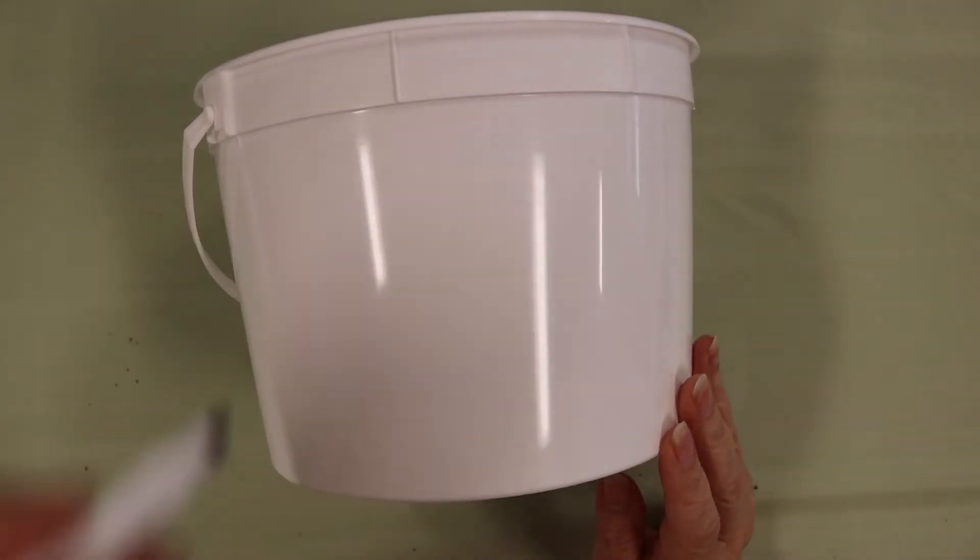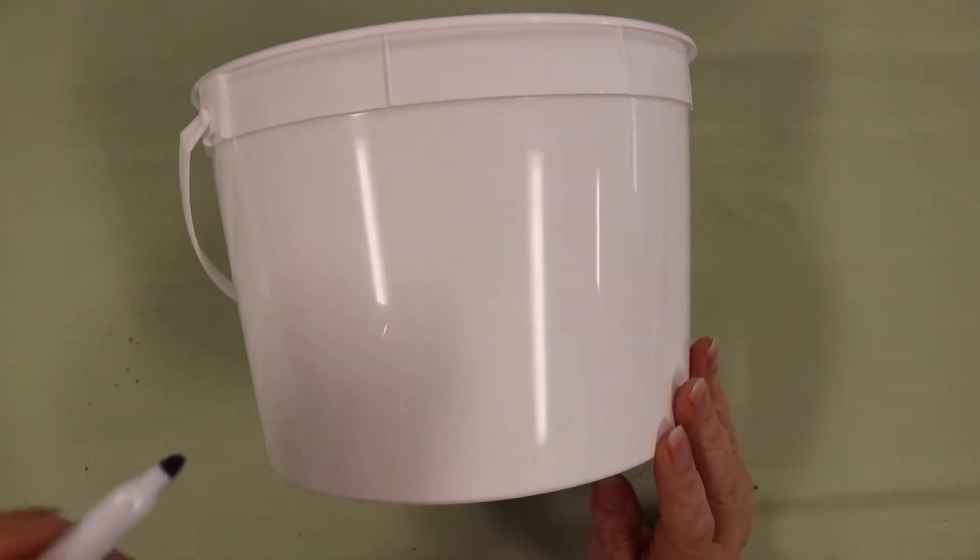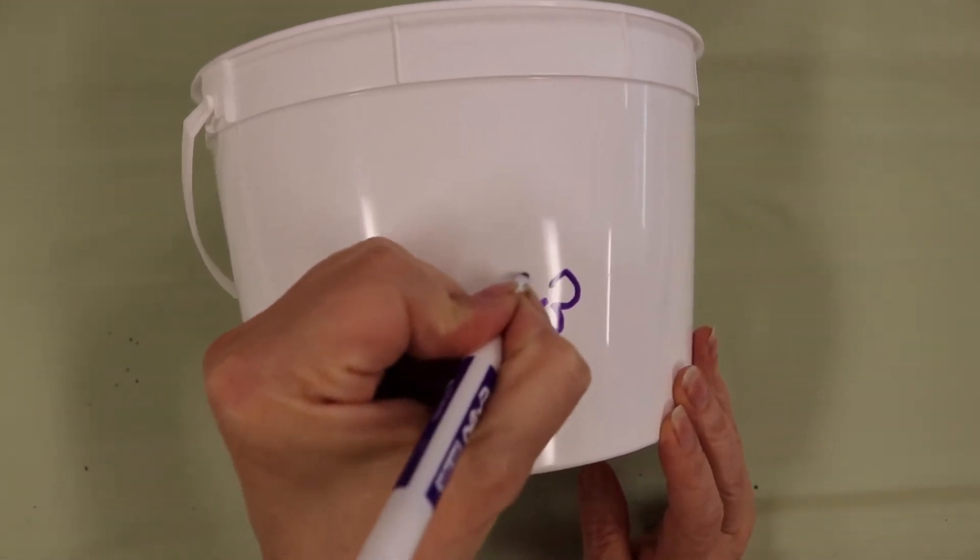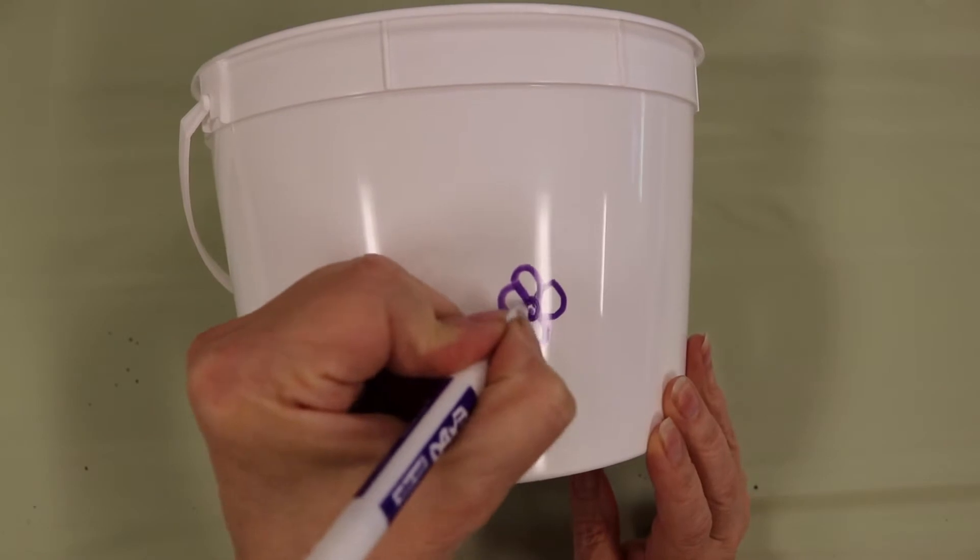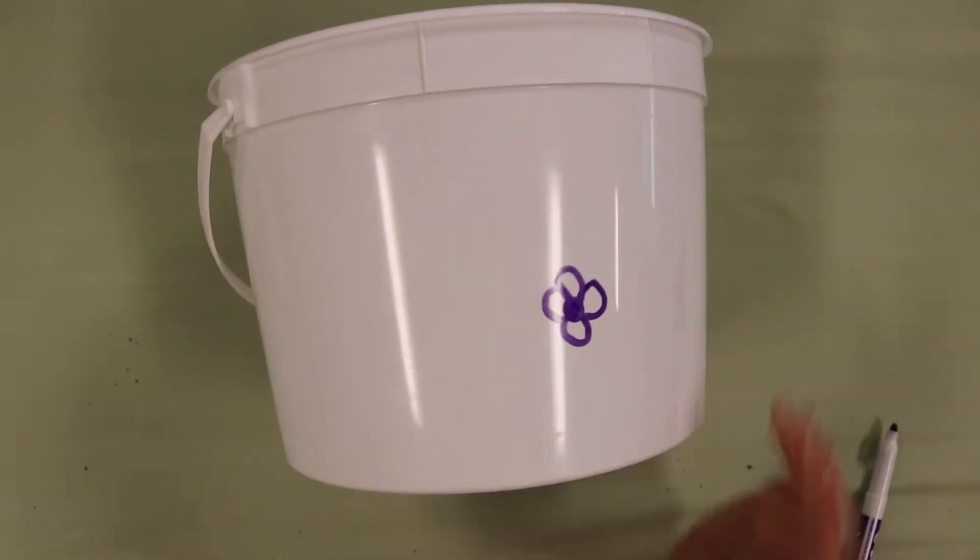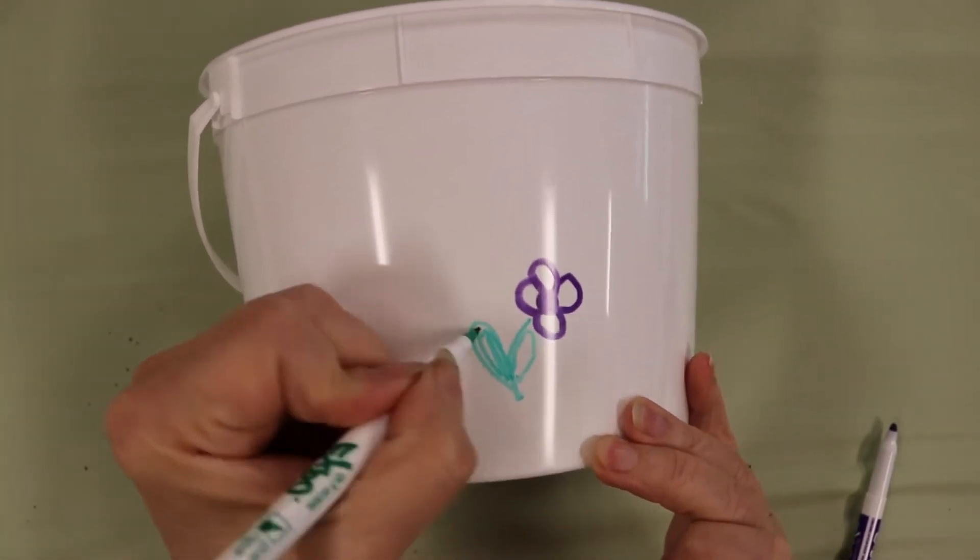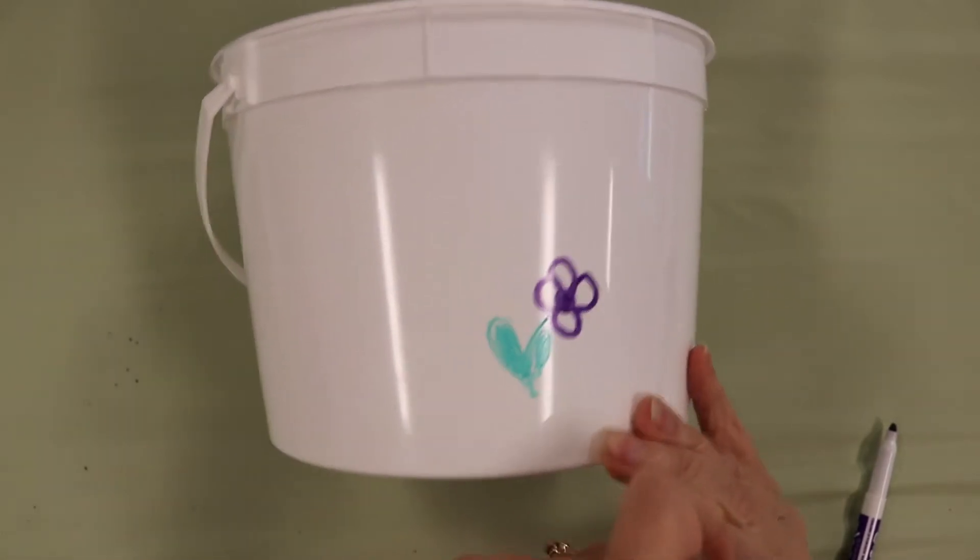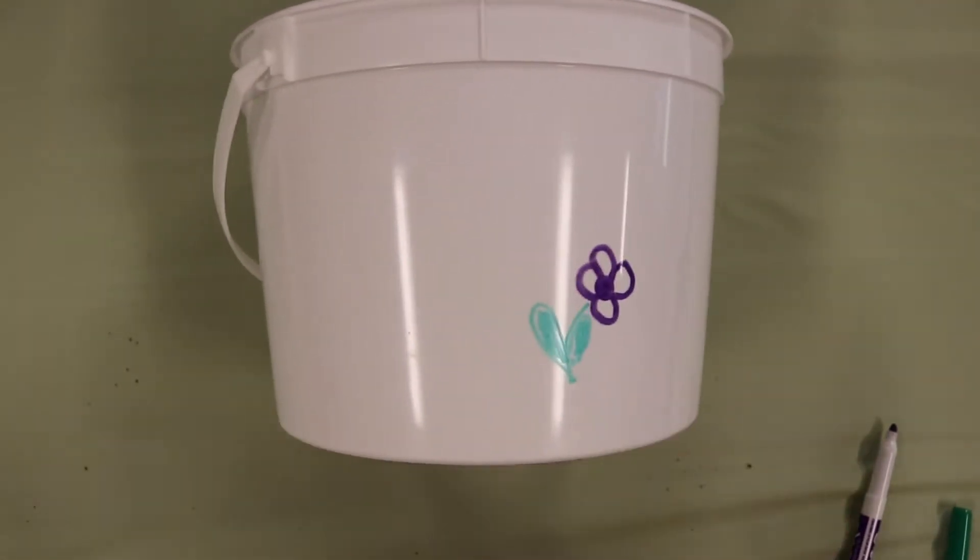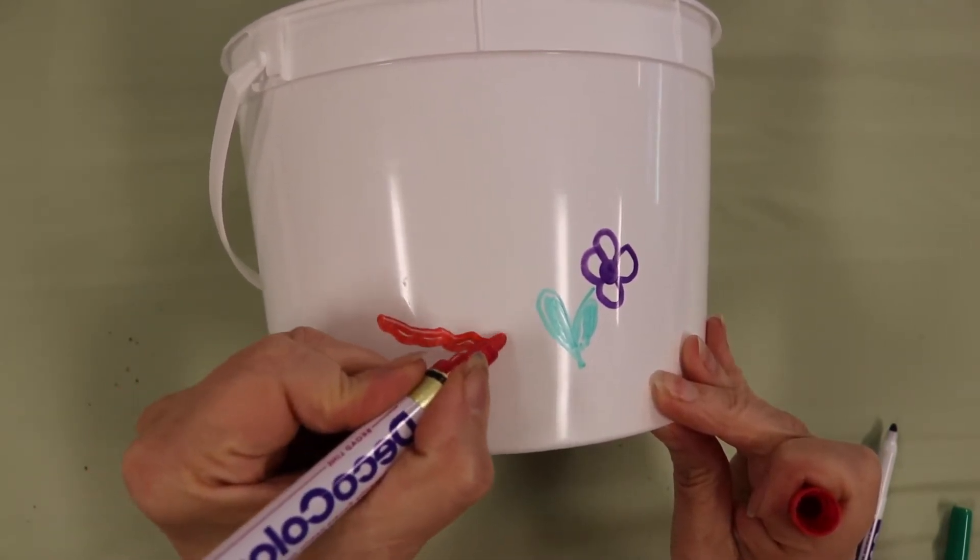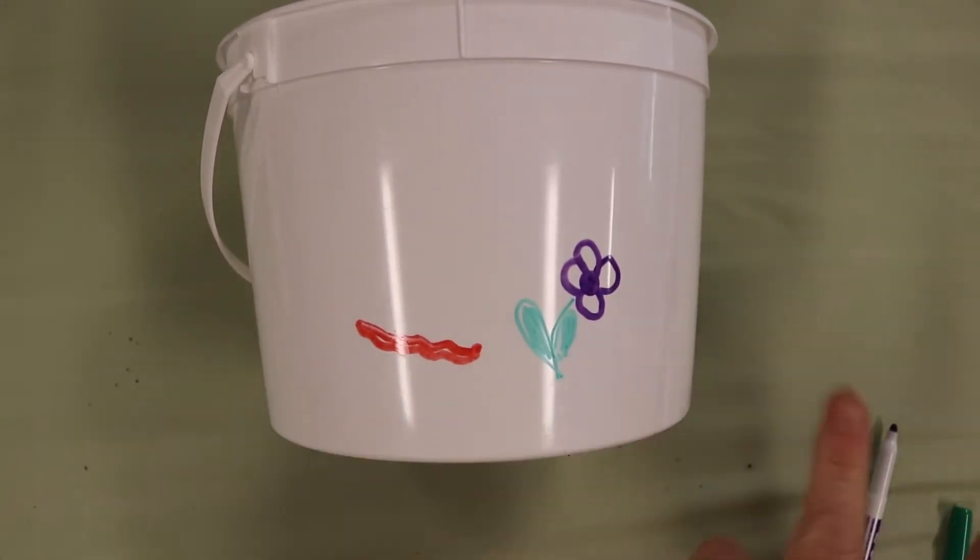So the first step to making your worm farm is decorating your bucket. You can use your own markers and decorate your bucket any way you'd like. I'm just going to do a simple flower, maybe put a stem, color it in. And then I think I'll make a worm. So you get the idea. You can decorate around the sides and along the top however you'd like.